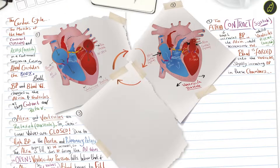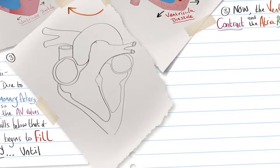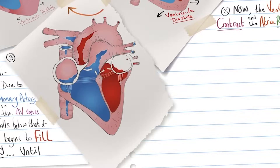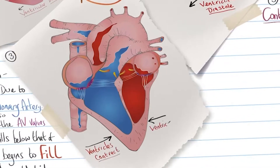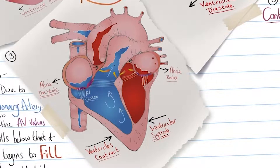In step three, the ventricles contract and the atria relax. The diagram of the heart at stage three shows the ventricles contracted — ventricular systole — whilst the atria are relaxed — atria diastole. Due to the AV valves being closed, blood is now forced through the open semilunar valves into the aorta and pulmonary arteries.